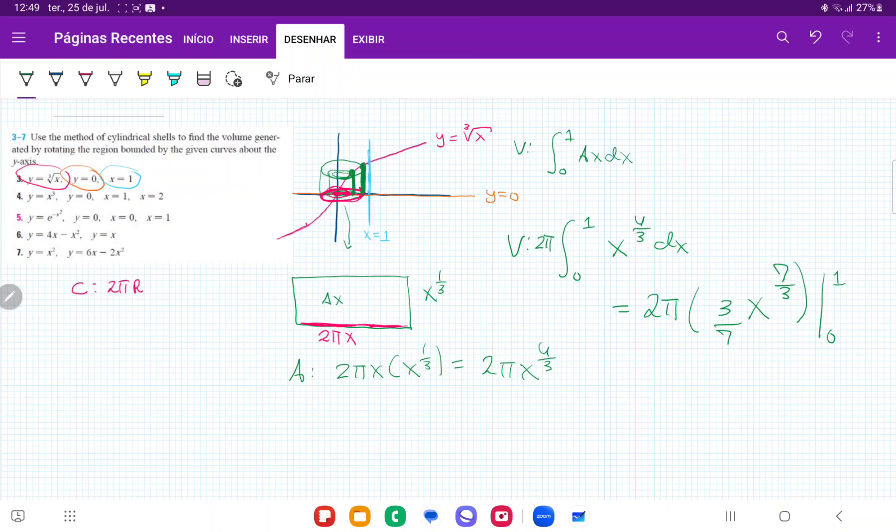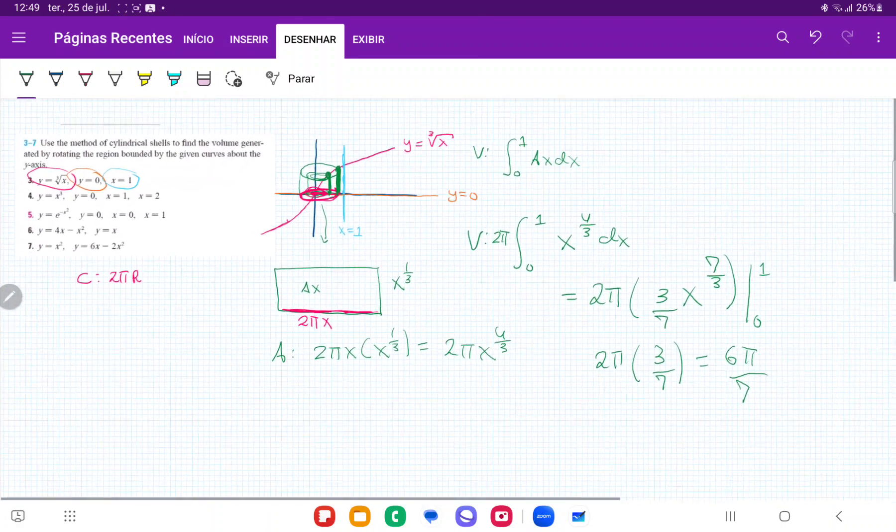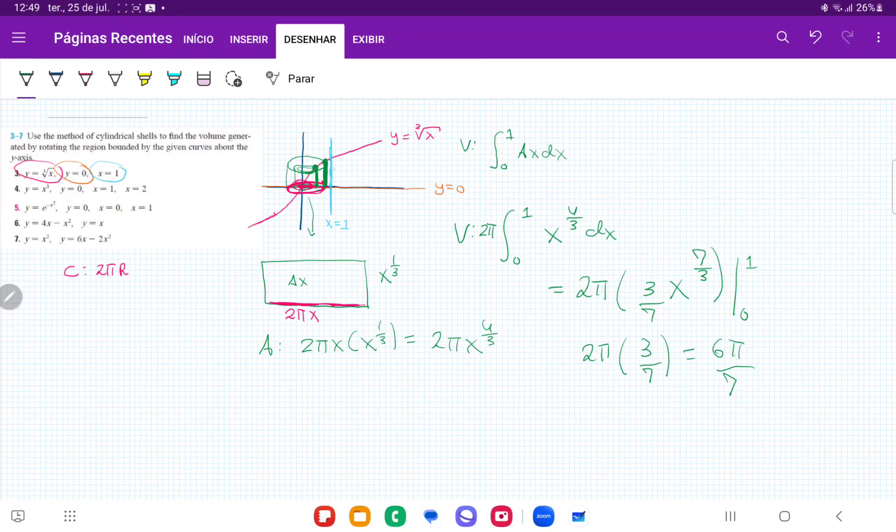Now we only have to evaluate the upper boundary, because the lower boundary is 0. And so this is just 2π times 3 sevenths times 1, which gives us 6π over 7. So that is our volume. When we take the area bounded between these curves, and actually I should have shaded that in, which is this area over here. And then we revolve it about the y-axis with a bunch of cylinders that have an area as a function of x.